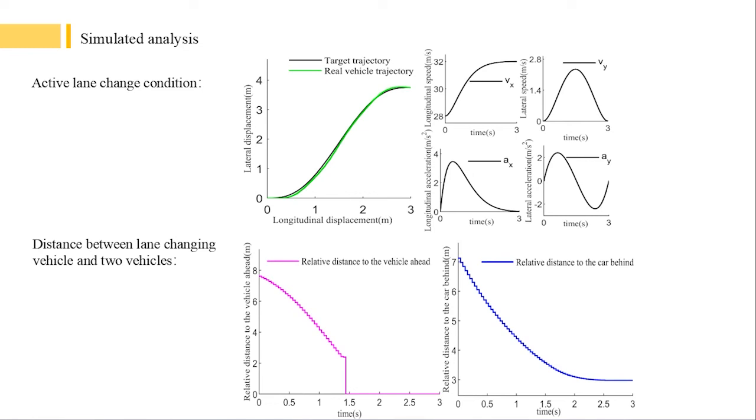Next is measured by the internet of vehicles and radar with fifth-generation mobile communication technology. The lane change vehicle drives out of the current line in 1.42 seconds. And the relative distance to the vehicle in front becomes zero.